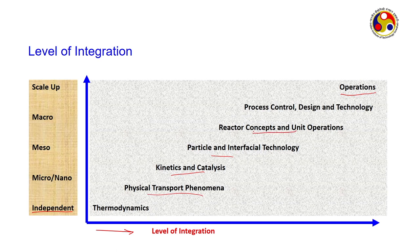Reactor concepts and unit operations: you design the reactors — batch, plug flow, CSTR — how to connect them, series or parallel. Process control comes under macro scale where we can measure certain properties. Finally, operations — the size of the plant — depends on what yield you want and what output capacity. For a refinery or thermal plant, how much volume of raw feed or what output of final product you intend to produce — that is all what operations covers.